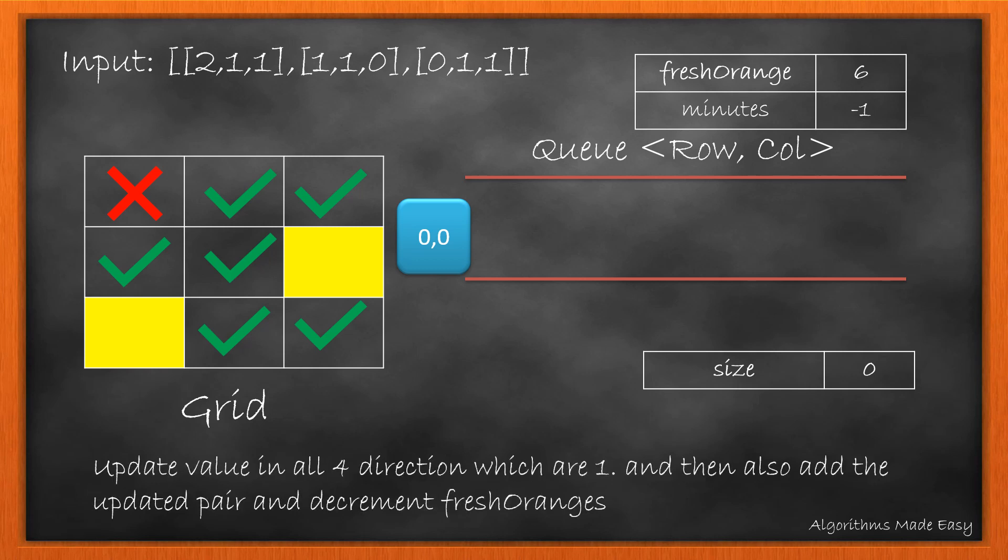For every element popped, we will update its 4 adjacent values to 2 if they are 1 and add their index into the queue and decrement the fresh orange count. For index 0,0, only these two positions have the value 1.